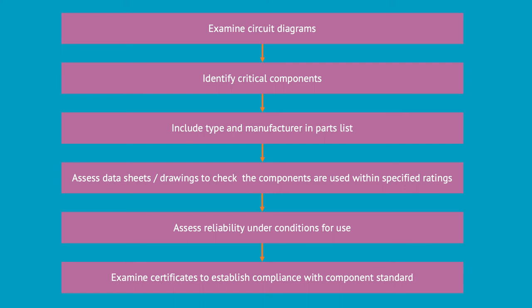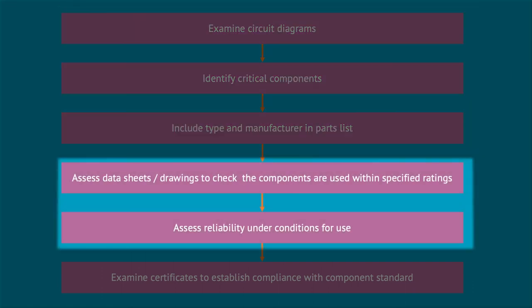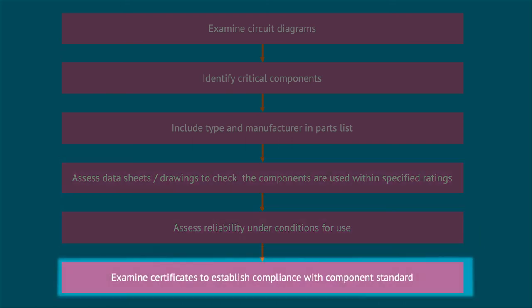To explain the approach the test house will apply, it will probably look something like this. The critical components are identified by examination of the circuit diagrams. Then their type and manufacturer are identified in the parts list or bill of materials. Then they assess data sheets and drawings to check that each component is used within specified ratings and the reliability of the conditions for use of the device. And last but not least, they check the certificate and any limitations for the specific type of component. So it can be a very good idea to check these things yourself before design freeze.